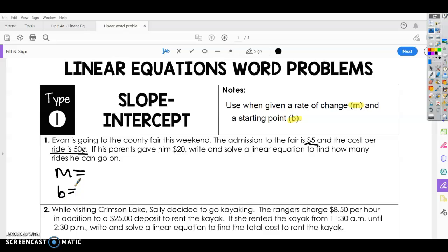If admission costs $5, we know we have to pay that even if we don't ride any rides. So we have to pay $5. That's our starting point. And then each ride costs $0.50.